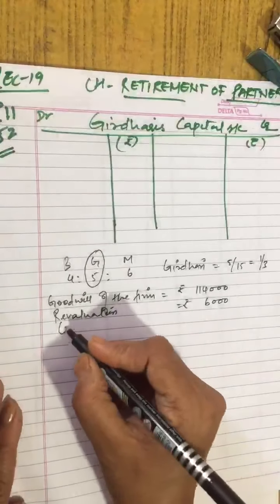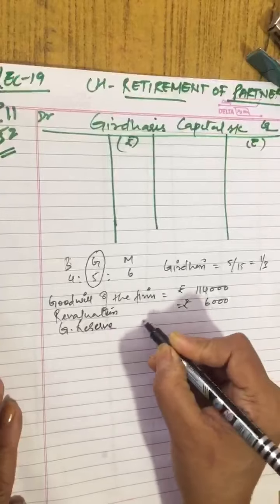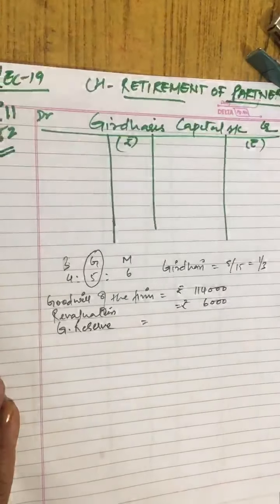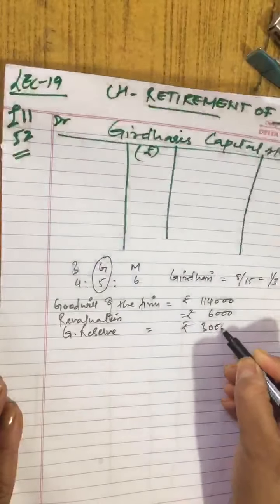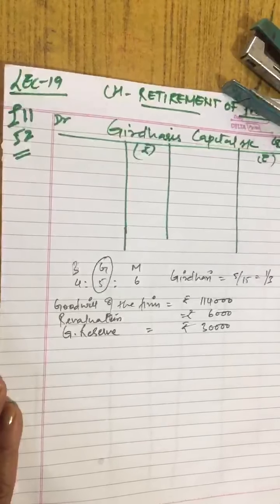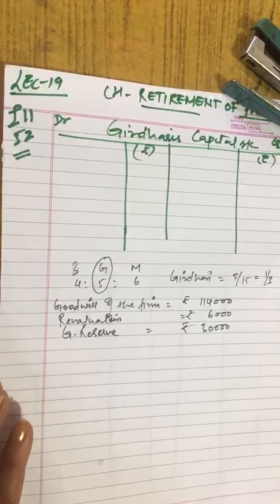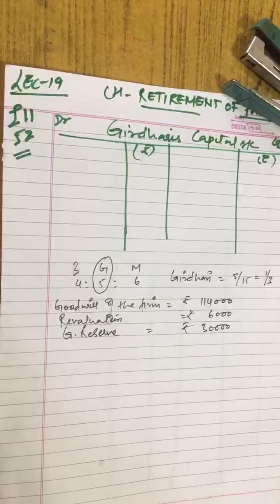So you don't need to make revaluation account. Revaluation profit is already given here. After that it is saying that general reserve given in question is rupees 30,000.